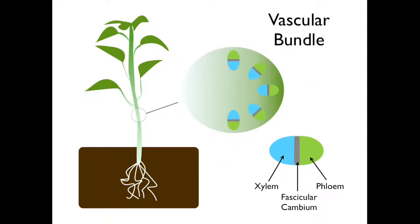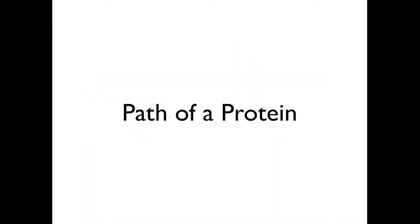Xylem and phloem help make up the vascular bundle. They are separated by a cambium. Xylem is always on the inside and phloem is always on the outside. We will now discuss the path of a protein and the organelles it moves through as it is synthesized.